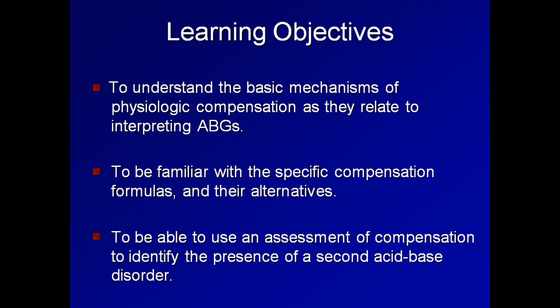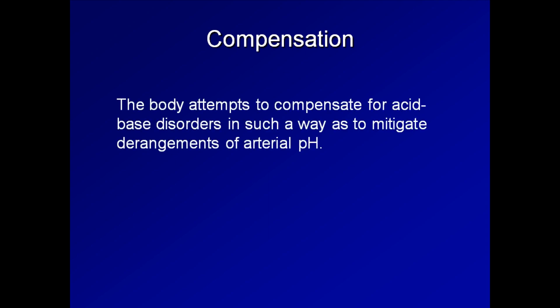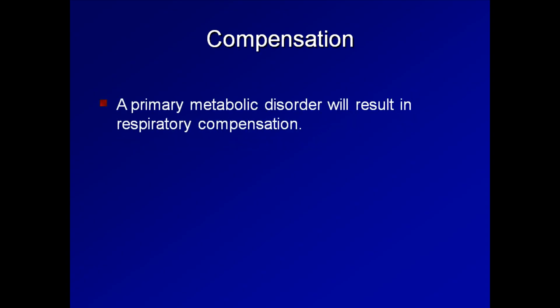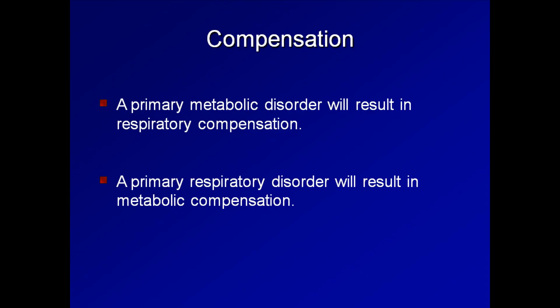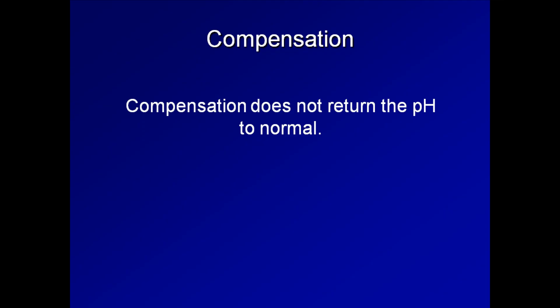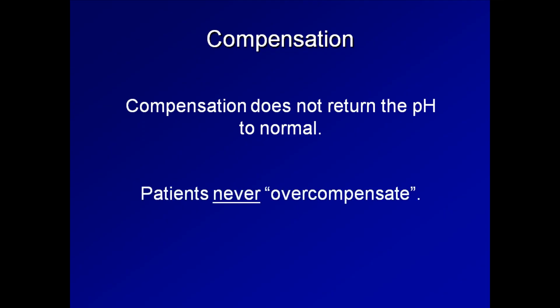The topic of compensation was first introduced in Lecture 2, but to remind you, the body attempts to compensate for acid-base disorders in such a way as to mitigate derangements of arterial pH. A primary metabolic disorder will result in respiratory compensation, and a primary respiratory disorder will result in metabolic compensation. Compensation does not return the pH all the way to normal, and patients never overcompensate.